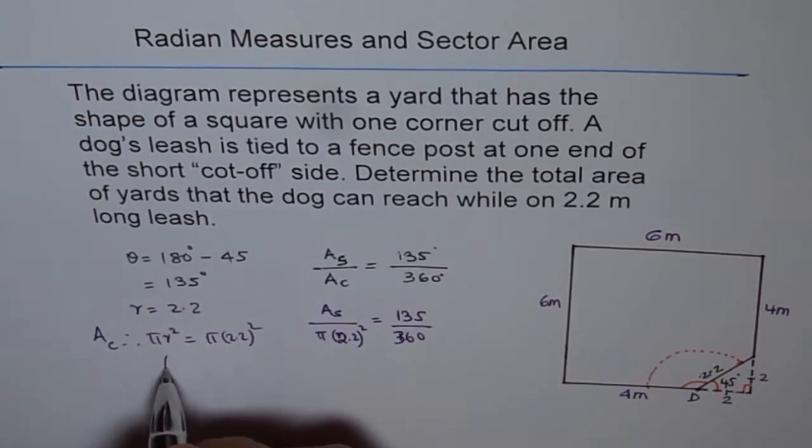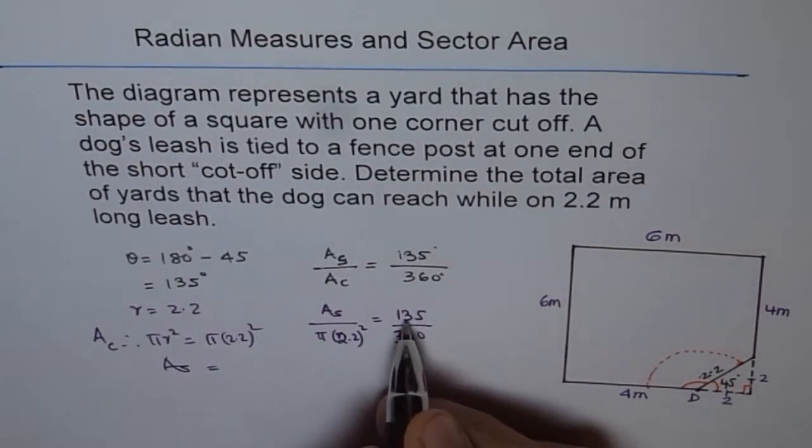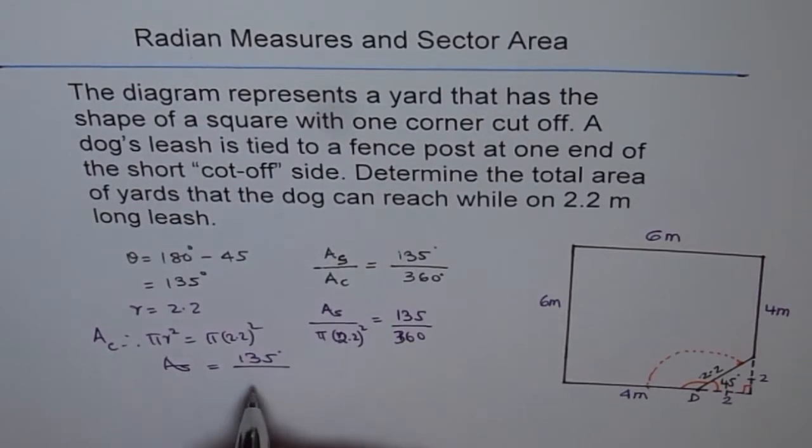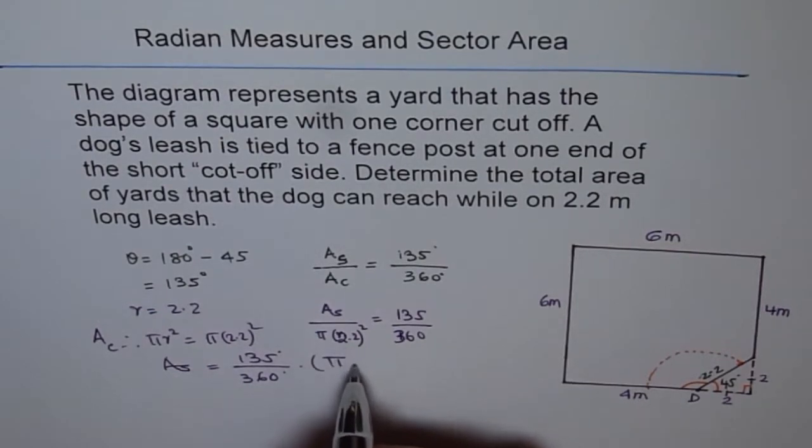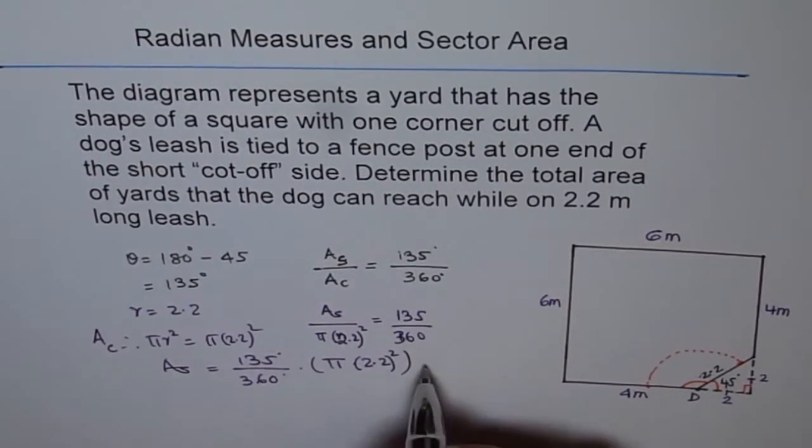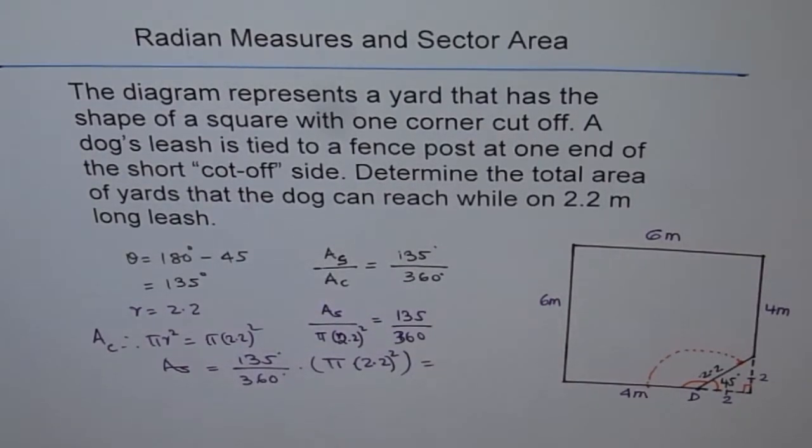So that equals 135 degrees divided by 360 degrees times pi r squared, which is pi times 2.2 squared. And we can calculate this value and find our answer.